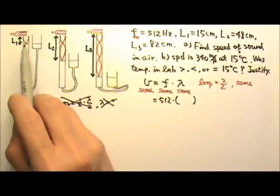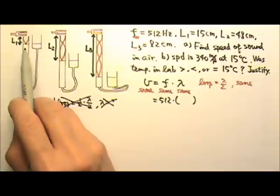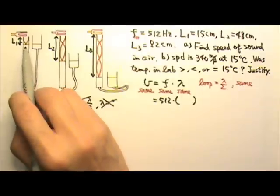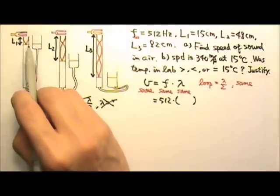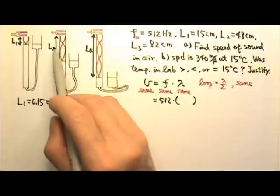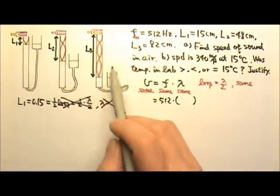The thing is, L1 may not be exactly half a loop. Depending on the wavelength and the size, the thickness of the tube, L1 can be a little more or a little less than half a loop. So it is more accurate for us to use the length of complete loops to find the wavelength.